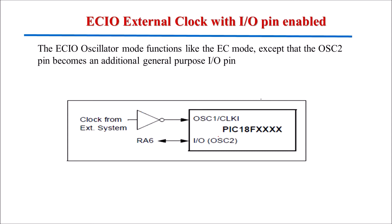The next oscillator mode is ECIO — external clock with IO pin enabled. In this mode, the same external clock signal is connected to oscillator 1 terminal, but at oscillator 2 terminal the frequency divided by 4 option is not available. Instead, the oscillator 2 pin can be used as an IO pin, which is pin 6 of port A, called the RA6 pin.